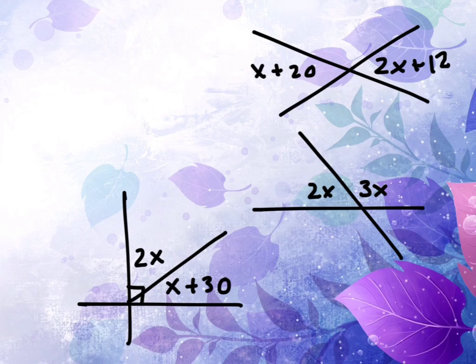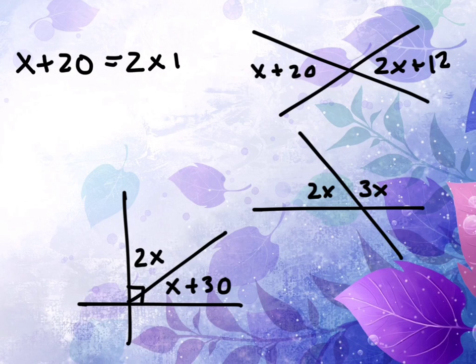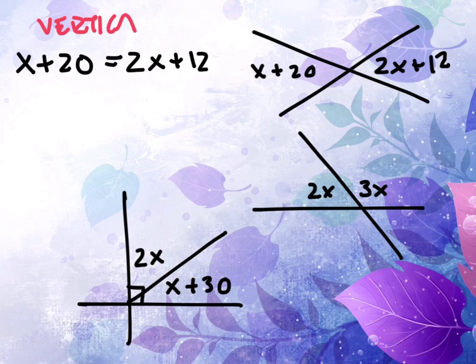I want to just quickly show you that we don't always set them equal to each other. In this first case actually we end up doing that. We say x plus 20 equals 2x plus 12. The reason we can say that is because we know that vertical angles are congruent or equal to each other.